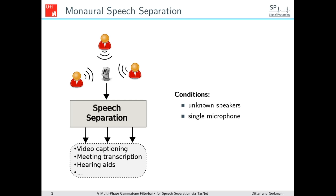First, let me introduce you to the problem of speech separation. In this graphic you can see multiple persons talking into a microphone. For some real-world use cases it might be necessary to extract the source signals of each speaker after the recording. Such a speech separation system could help with use cases like video captioning, meeting transcription, or hearing aids. The conditions under which we want to solve the problem are that we do not know the characteristics of the speakers ahead of time, and we care about monaural speech separation, so we only have a single microphone channel.